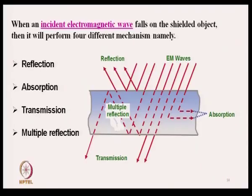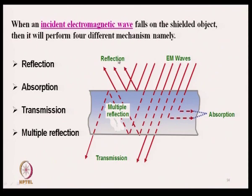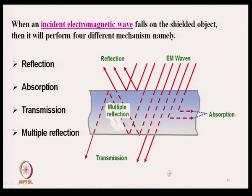The quality of shielding is expressed in terms of shielding effectiveness, measured in decibels — a higher decibel value means higher shielding effectiveness. When an incident electromagnetic wave falls on a shielded object, it will perform four different mechanisms: reflection, where the wave gets reflected and does not pass through; absorption by the shield material; transmission — ideally for a perfect shielding material, transmission should be zero; and multiple reflection.